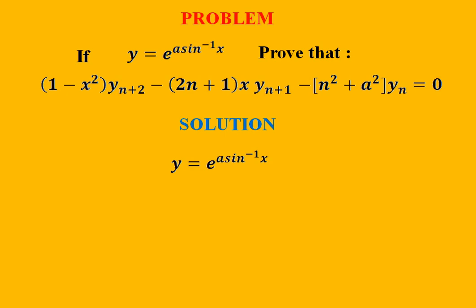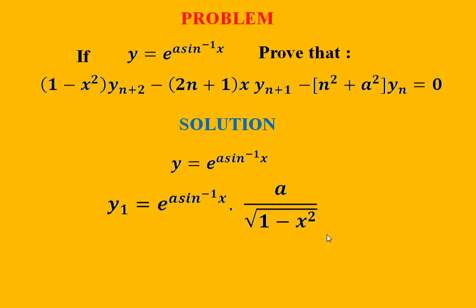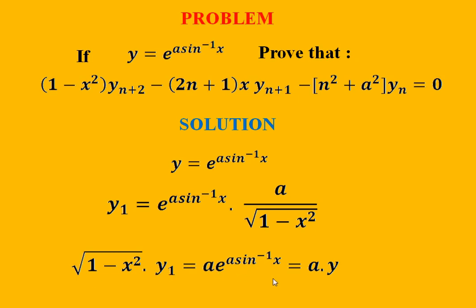Here y is e^(a·sin⁻¹x). The differentiation of y gives y1, meaning dy/dx, equal to e^(a·sin⁻¹x) multiplied by the differentiation of a·sin⁻¹x, which is a divided by the square root of (1 - x²). This can be rewritten as: √(1 - x²)·y1 = a·e^(a·sin⁻¹x).